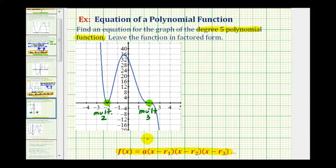So to find the value of a, we'll also have to find one more point on the function. Let's go ahead and use the y-intercept here. So we'll use the point with coordinates zero, thirty-two.